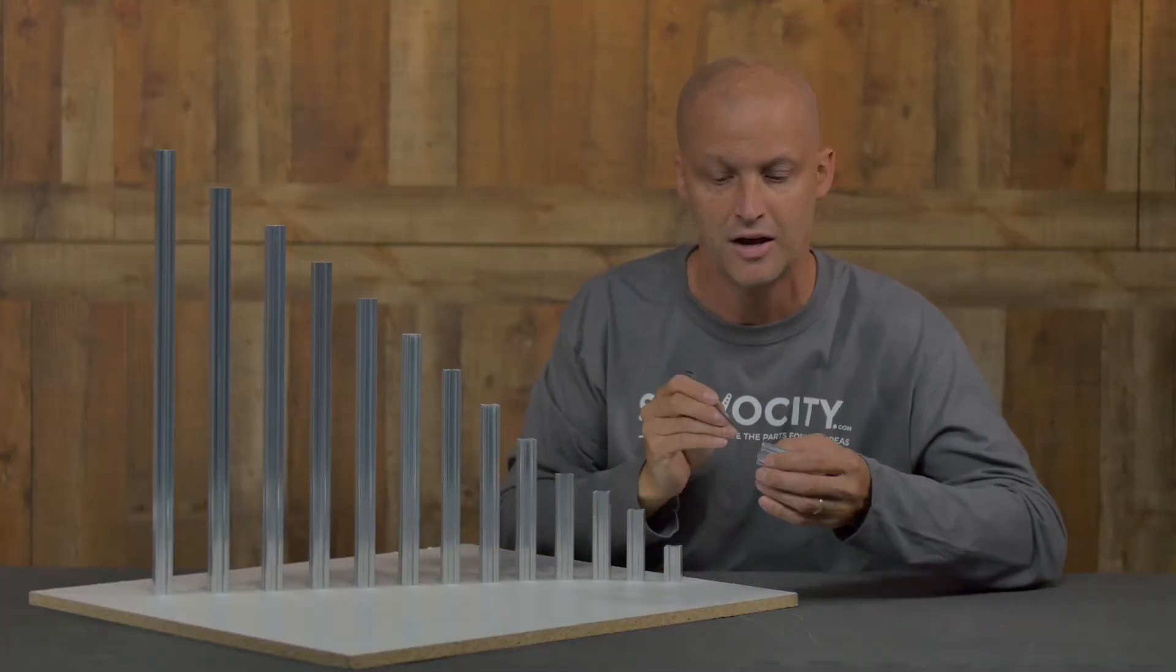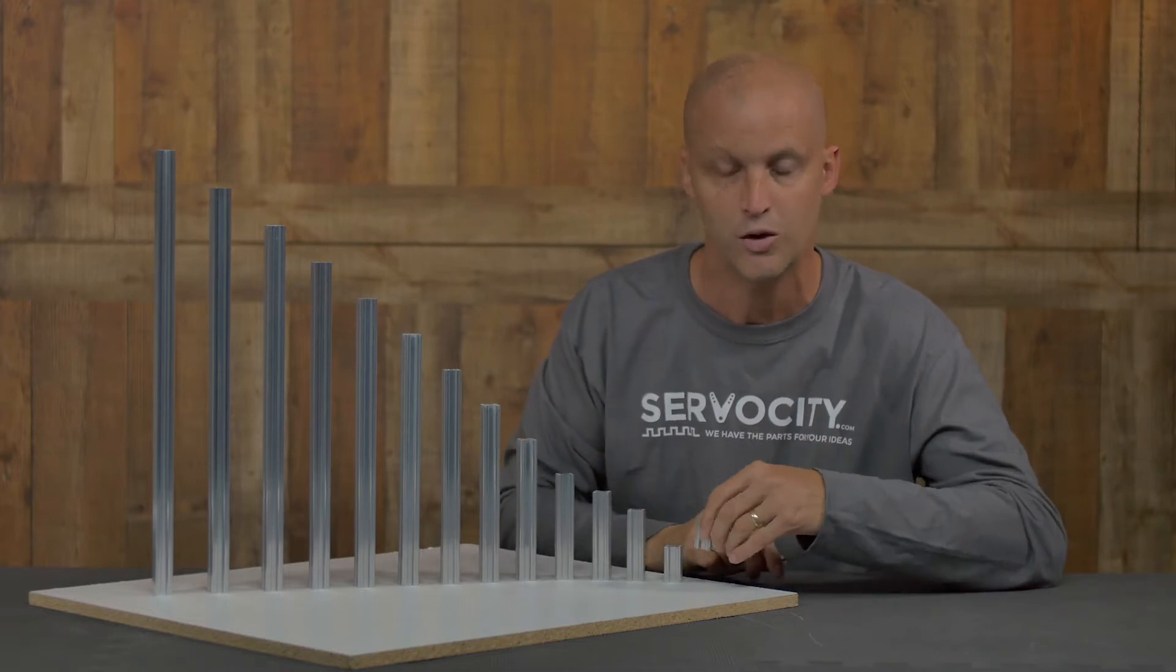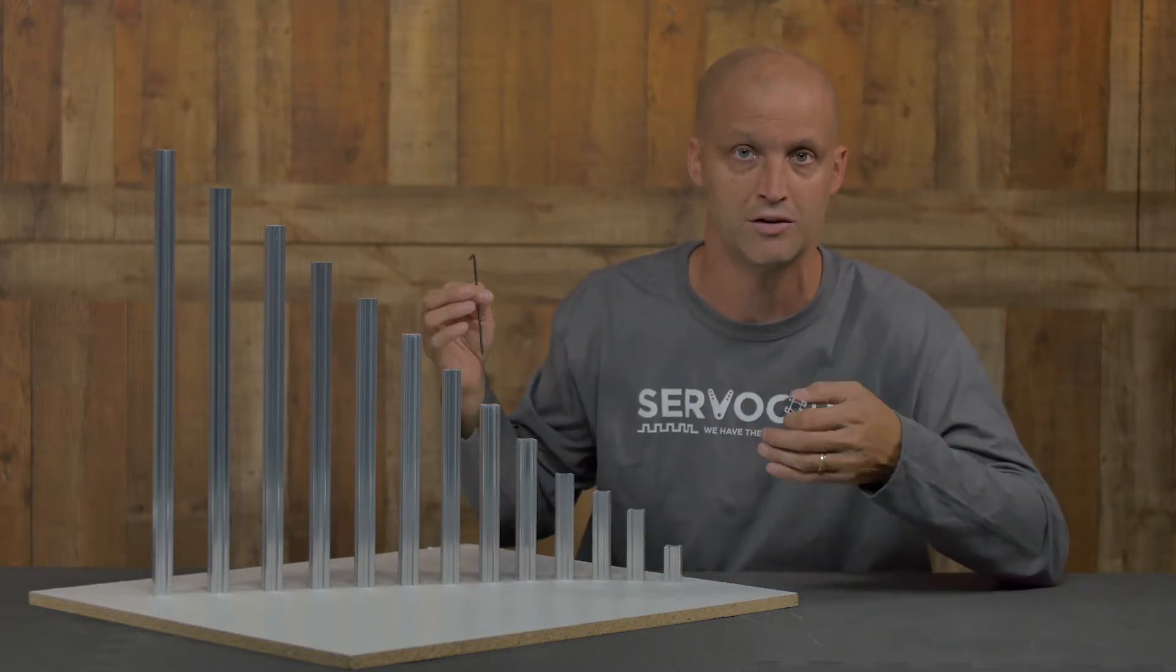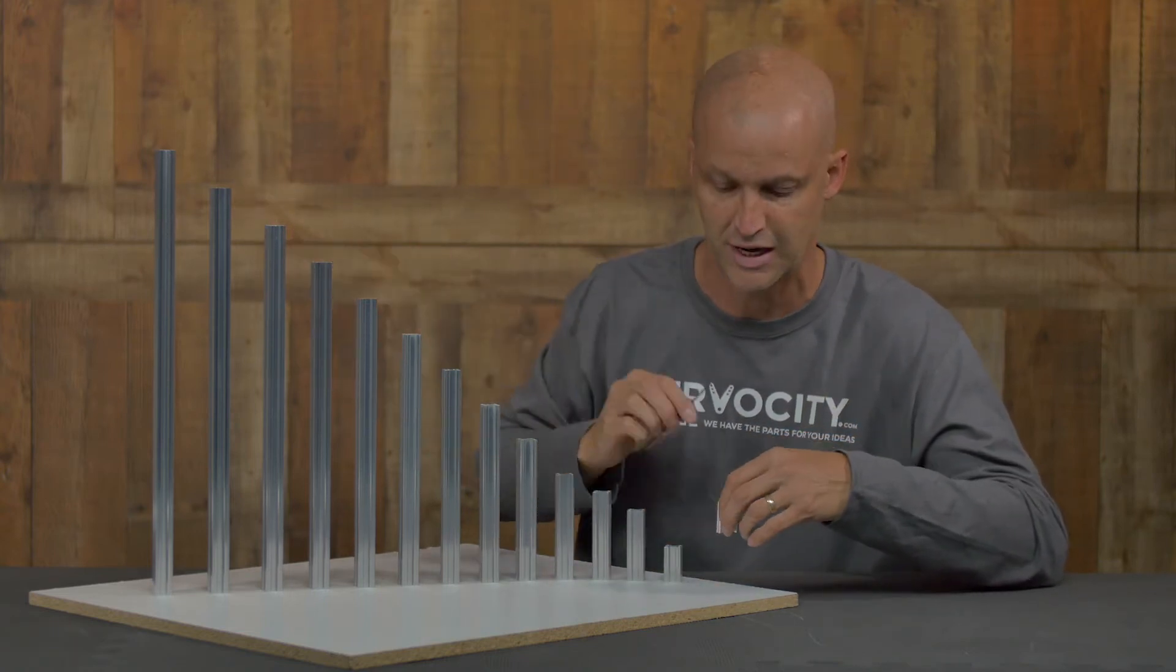But not only that, now all the holes are pre-tapped, 6-32 pre-tapped, which makes putting your projects together much easier. You don't have to pull the tap out and tap the ends or even cut your X-Rail since we offer it in so many different lengths.